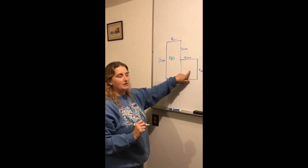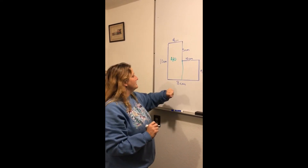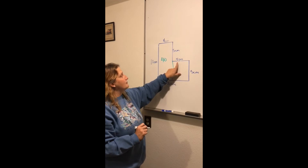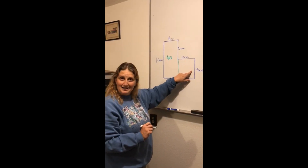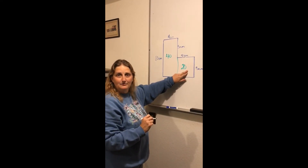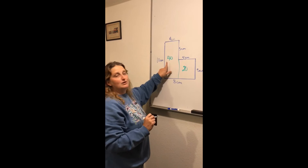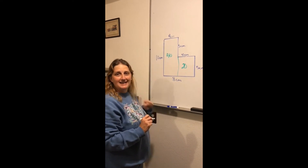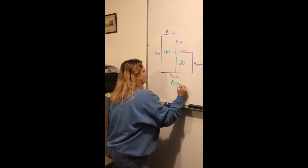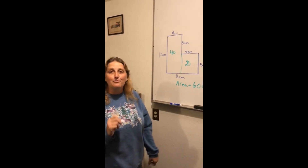Now I'll figure out the smaller rectangle. I need the length and the width — 4 will be my width and 5 is my length, so 4 times 5 is 20. I couldn't use the 8 because it goes the whole width of the polygon. Now I add 40 and 20 together to get 60. So the area equals 60 centimeters squared.